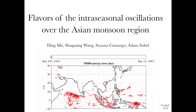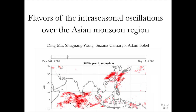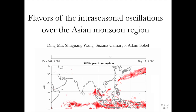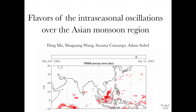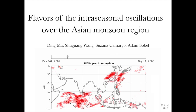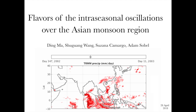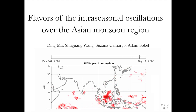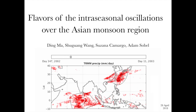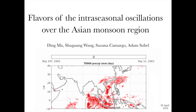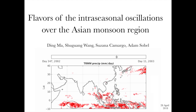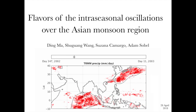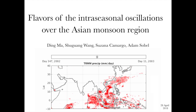Today I'm going to talk about the flavors of intraseasonal oscillations. Here I'm showing TRMM precipitation based on satellite observation — Kyle was using this dataset too, probably because of its great coverage and accuracy. We are looking at the Asian monsoon region; color shows precipitation and the contour shows spatially and temporally smoothed precipitation. Here initiated in the Indian Ocean, propagating eastward, stretching, and splitting. This is an example of the intraseasonal oscillations, or ISOs.